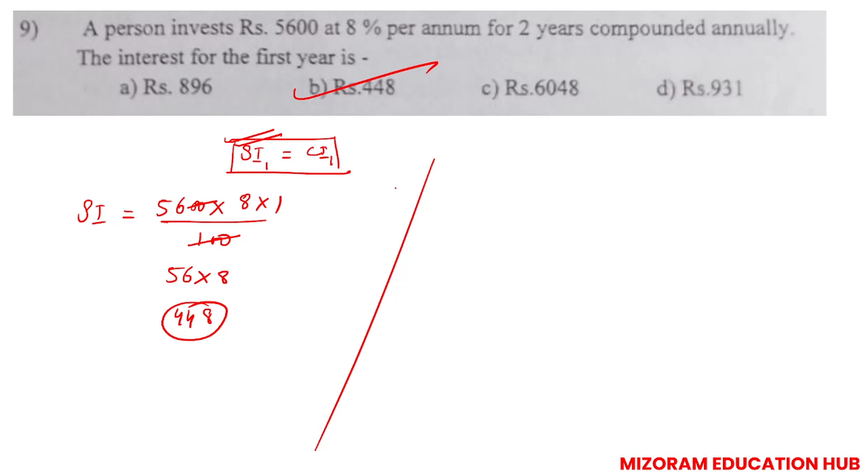Now CI - I can use the formula principle times (1 plus r by 100) raised to the power n minus 1. This is the formula for CI. And for the first year, SI is always equal to CI. So CI equals principle 5600, rate is 8 percent, time is one year.